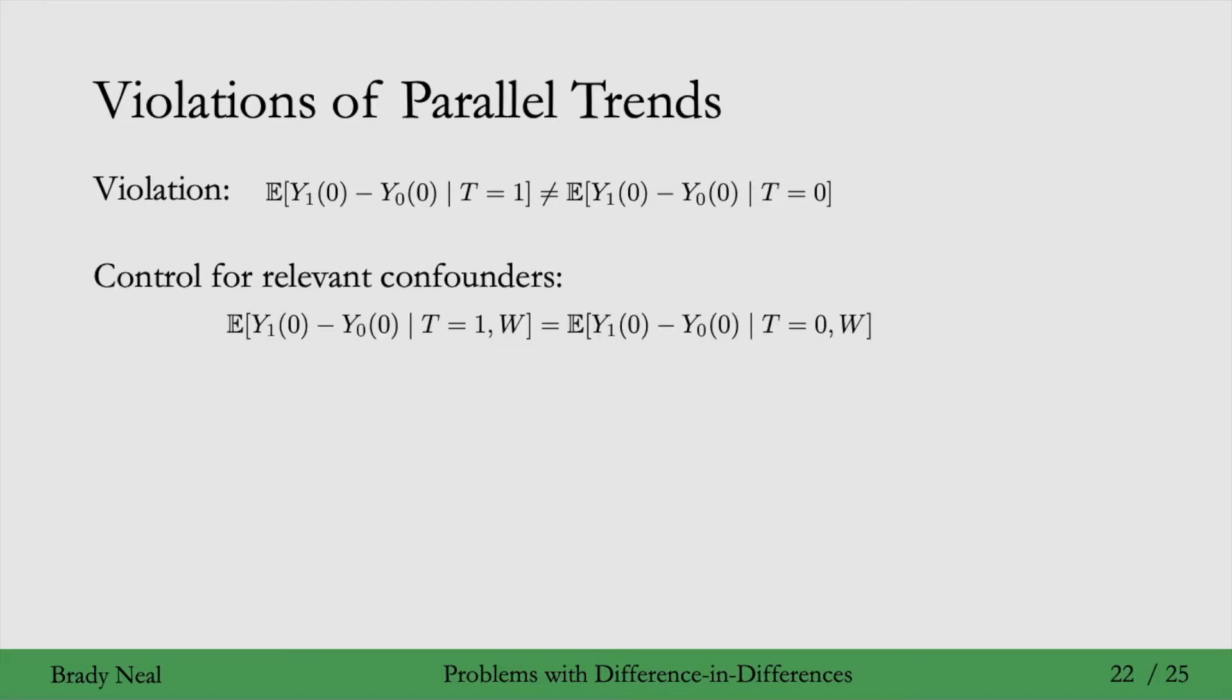One cool thing that you can do is when you have a violation of the parallel trends assumption, just condition on some variables W here, that hopefully will give you parallel trends. So it's a bit like when before we were saying, okay, we need to block some backdoor paths, so let's condition on these variables to block these backdoor paths.